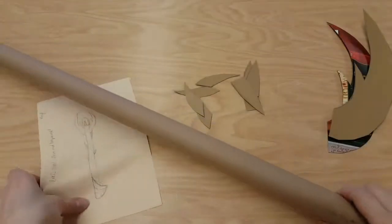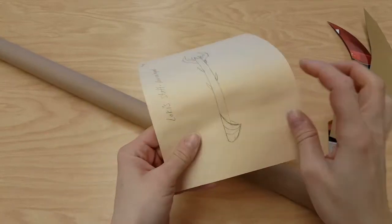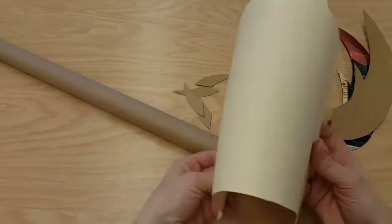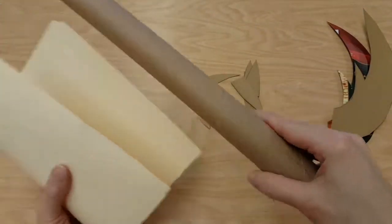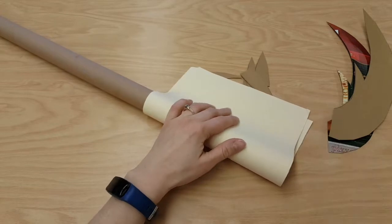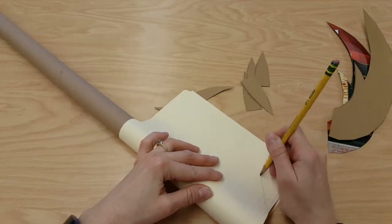For the bottom part of my staff, the design is a little more complicated, something that needs to wrap around the tube. So I picked a piece of cardboard that's a little more flexible. It's just an old file folder. Wrapping it around my tube so I can plan where the object needs to go.